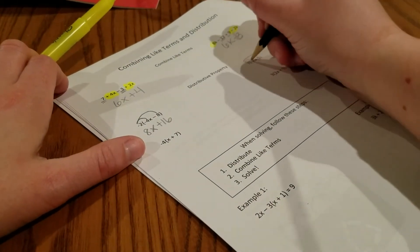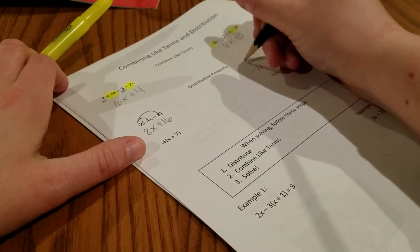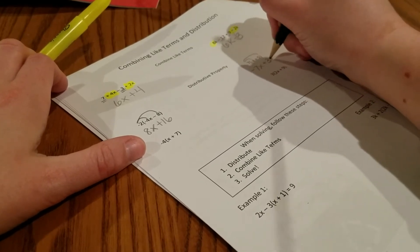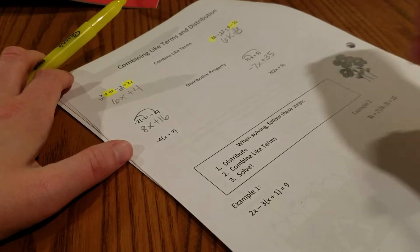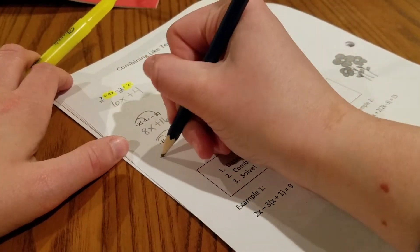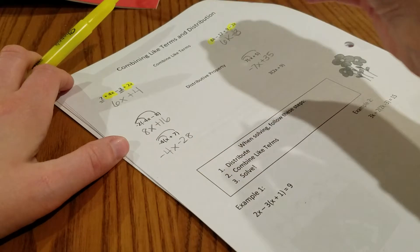7 gets distributed. 7 times negative x, negative 7x. 7 times 5 is positive 35. Negative 4 gets distributed, so negative 4x minus 28.